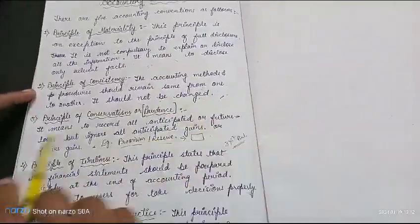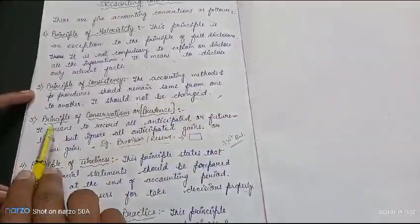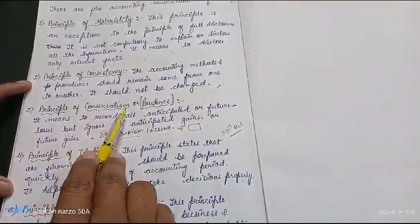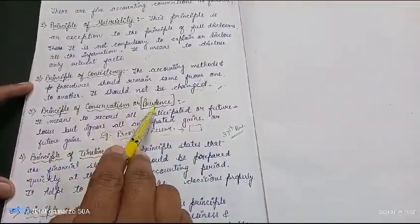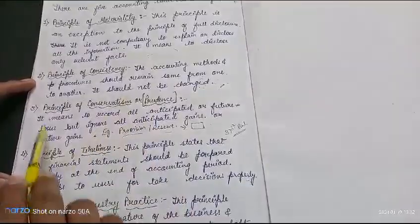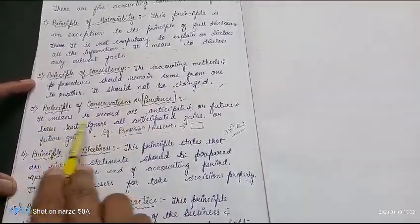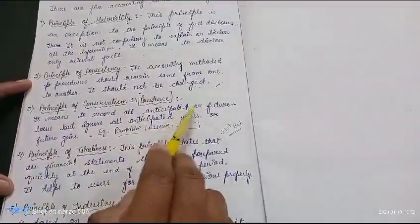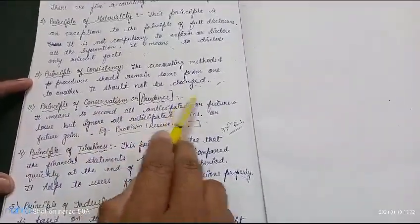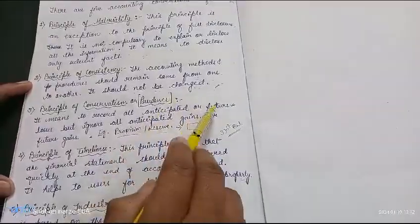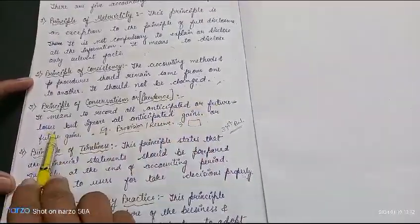The third principle is the principle of conservatism, also called the principle of prudence. It means to record all anticipated or future losses.